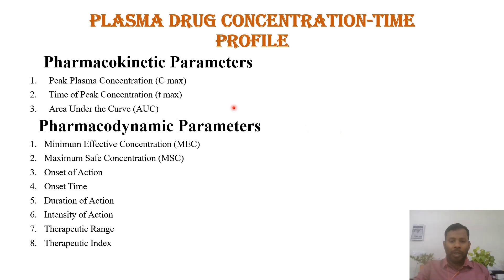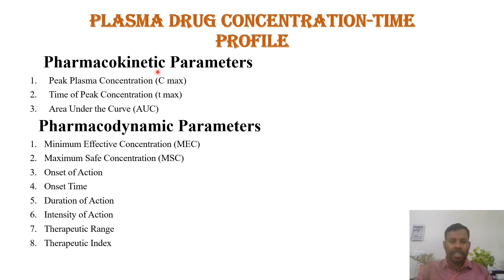One by one, each point we will discuss. There are 3 pharmacokinetic parameters and 8 pharmacodynamic parameters. Those 3 pharmacokinetic parameters are Cmax, peak plasma concentration; then Tmax, time of peak plasma concentration; and AUC, area under the curve.